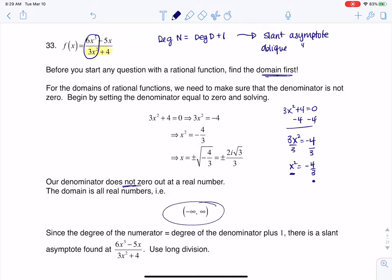So another way of saying that is our denominator never zeros out, so we're going to keep our domain as all real numbers. There's no vertical asymptotes, there's no holes.